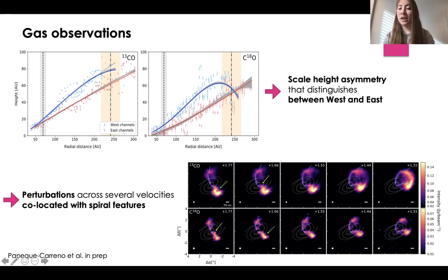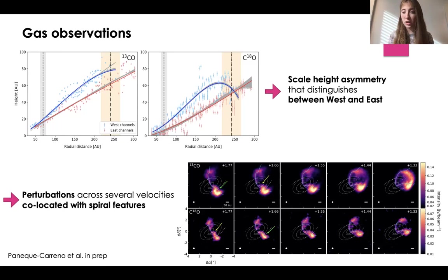Contrary to previously detected kinks associated with the presence of a planetary companion, these kinks are more in resemblance to what Cassandra Hall found in her 2020 work of a GI wiggle — a strong perturbation across several velocities that is also co-located with the innermost spiral feature. This is observed both in the 13CO and also in the C18O, even if less strong.